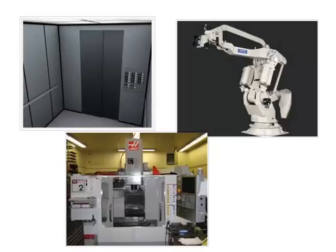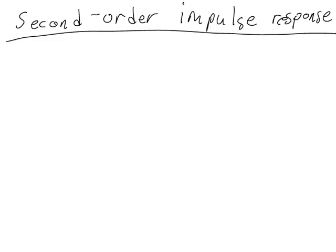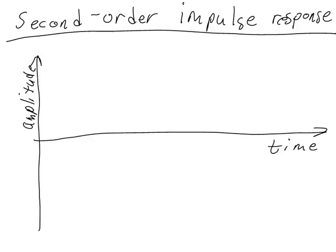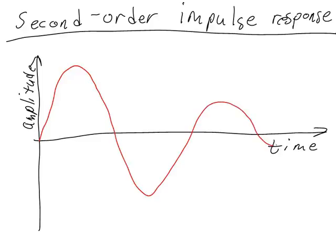In order for us to successfully program things like elevators and robots and manufacturing machines, we have to have a good understanding of how a second order system responds to an input. Let's look at that now by looking at the impulse response of a second order system. When we apply an impulse input to a second order system, there are three different ways that the system might respond. The first possible type of response is called underdamped.